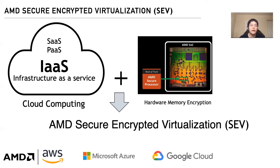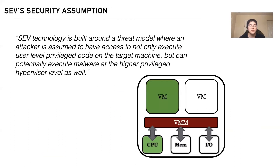Let's start with some background about AMD Secure Encrypted Virtualization, SEV. SEV is AMD's new technology since 2016 and is adopted or will be adopted in all mainstream cloud service providers. SEV is built on top of both traditional virtualization and hardware memory encryption technology. The goal of SEV is to protect virtual machines even when the host is not trusted.